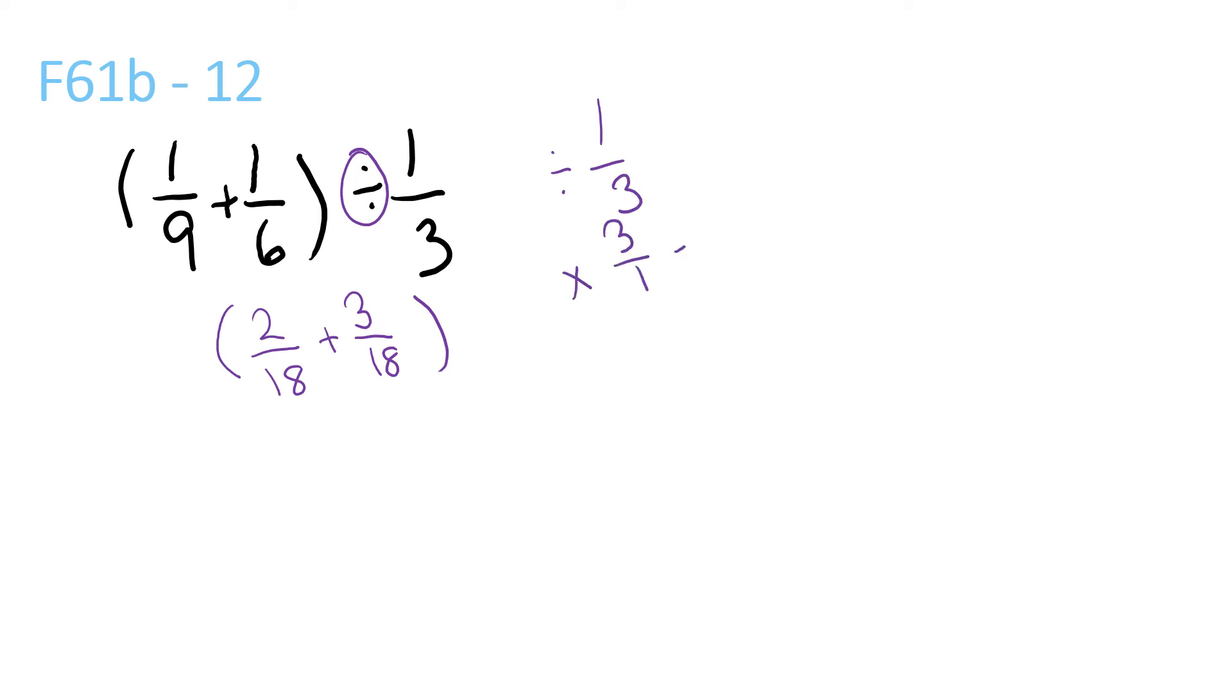So it would be times 3 over 1. 3 over 1 is equal to 3. So you do times 3. 2 plus 3 is 5 over 18, times 3.